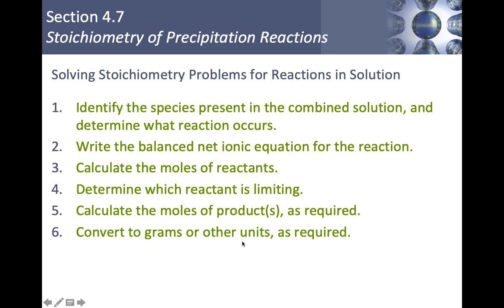How do we solve solution stoichiometry problems? The steps are: (1) identify species present in the combined solution, (2) determine what the reaction is and write the balanced net ionic equation, (3) calculate the number of moles, (4) determine which reactant is limiting, (5) calculate the moles of product required, and (6) convert to grams or other units as needed. This looks very similar to stoichiometry from unit three.